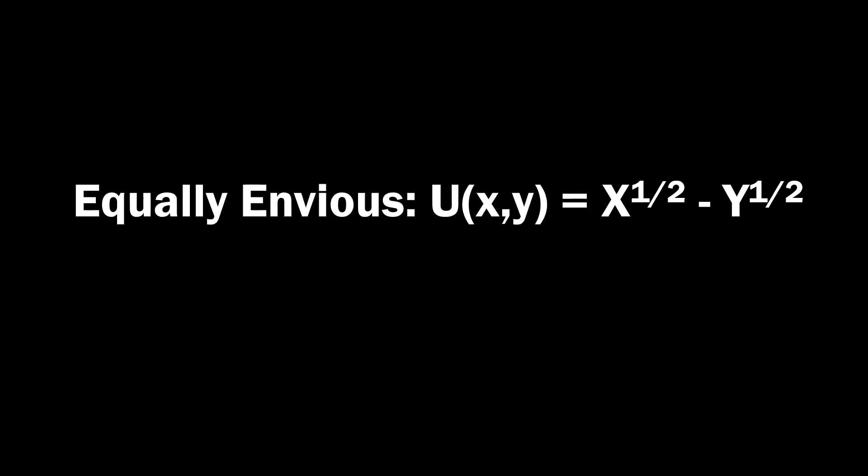Another one we could consider here is that we have this equally envious payoff here. And so this one's a little more pernicious here. I get some payoff X to the one half power because I'm risk averse. And then what happens is that's minus any payoff that you are receiving player Y. So the higher that Y's payoff goes, the less utility that I player X actually get here.